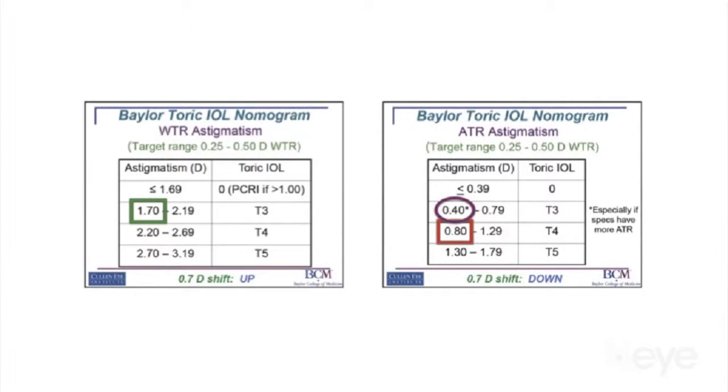They've developed a nomogram called the Baylor nomogram, which you can apply in a broad-stroke fashion using just your anterior corneal topography, but obviously that's going to be a population mean. Not everyone is going to have that 0.7 — some will have 0.3 and some will have 1.4 because there's a range. So it's better to measure posterior corneal astigmatism individually on each patient and use a value for total corneal astigmatism in your toric calculator.